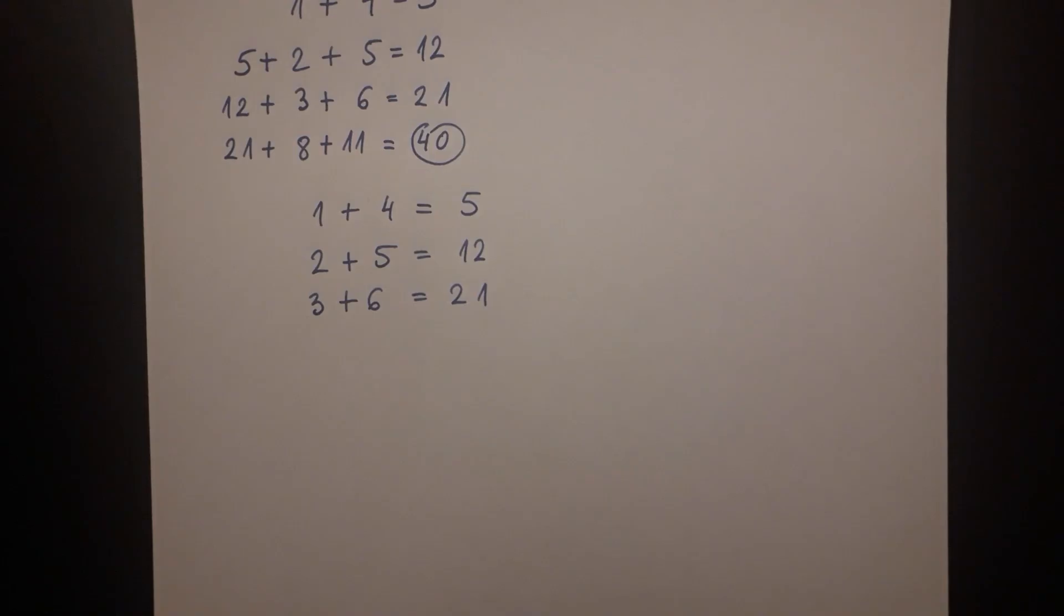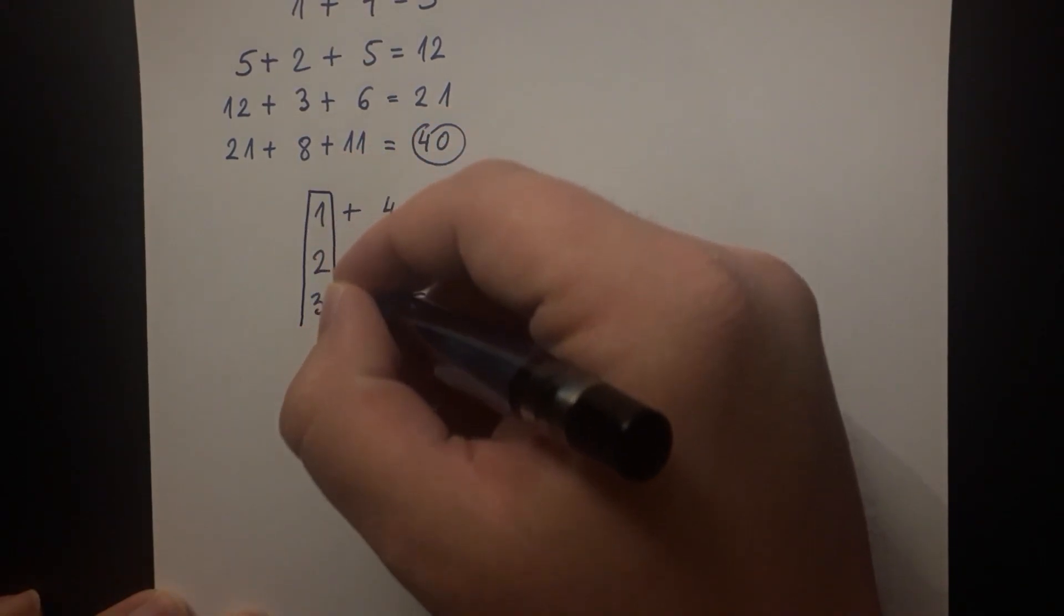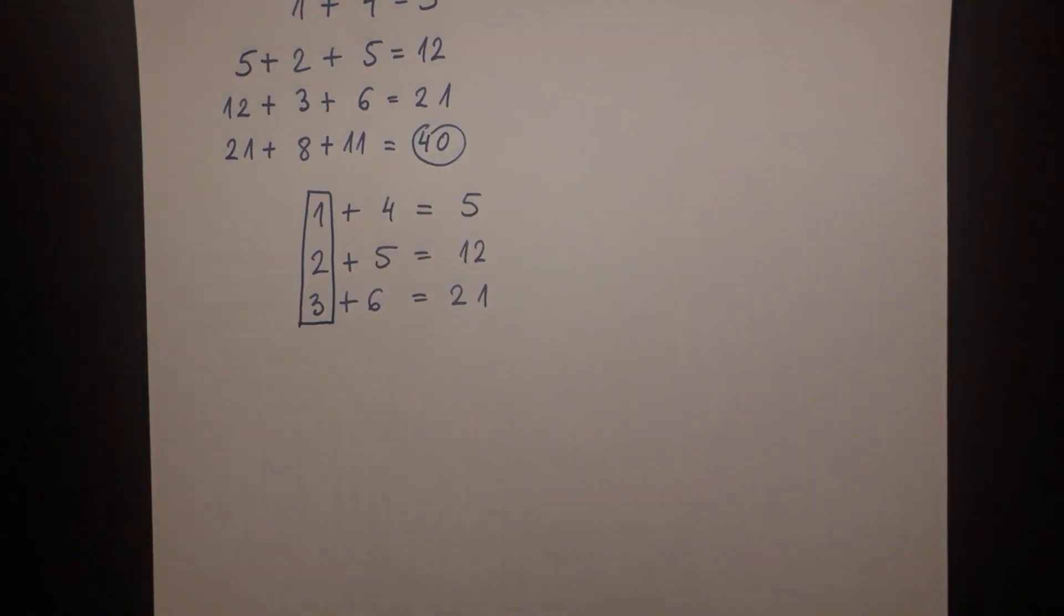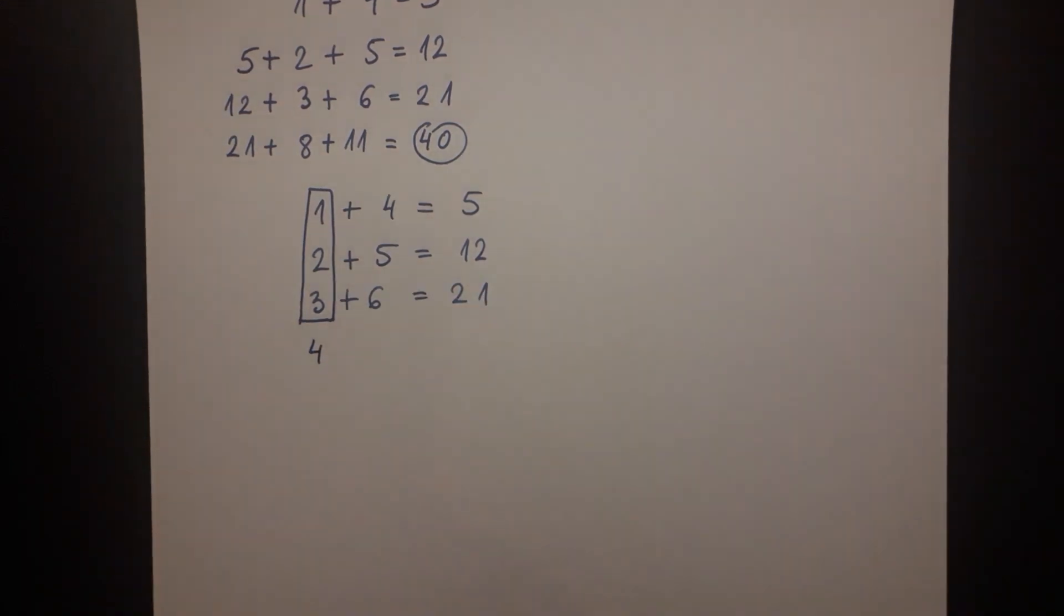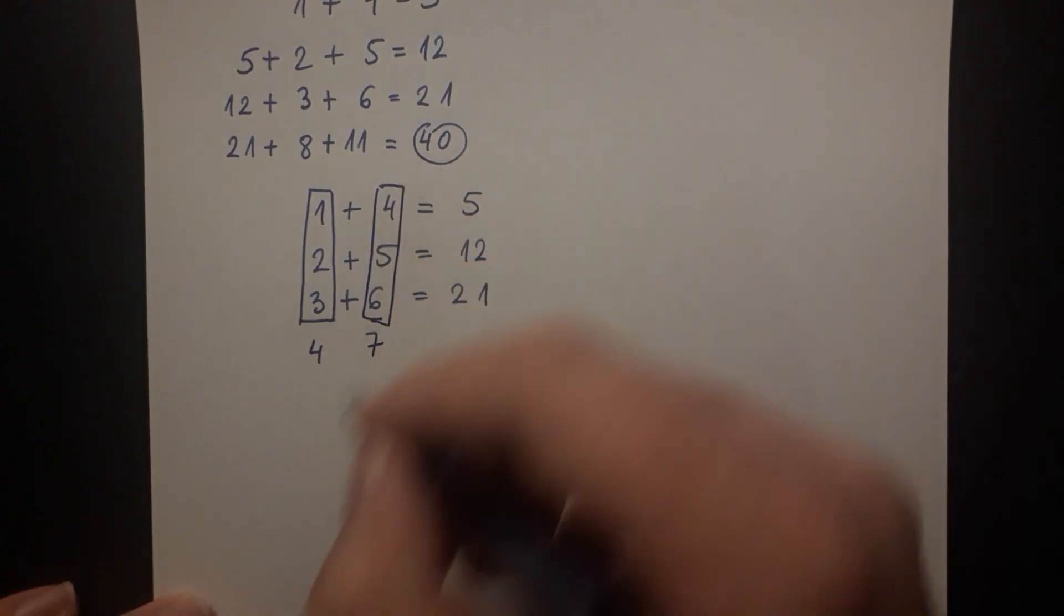Notice that the first numbers we are adding are 1 and then 2 and then 3. If you continue this pattern you might think that the next number we should be adding is 4. The second number according to that should be 7 because we have 4, 5 and 6 in previous equations.